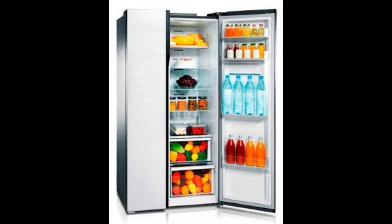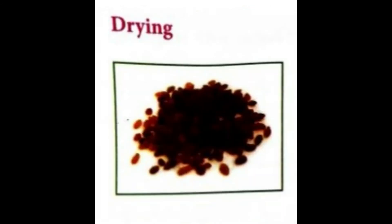Refrigeration is the most common way to preserve food at low temperature because the germs cannot grow. We can preserve fruits, vegetables, milk, meat, etc. for several days in the refrigerator. Drying is one of the most ancient methods of food preservation. Food items are dried in the sun or in an oven to remove the moisture from the food. For example, grapes are dried to give raisins.